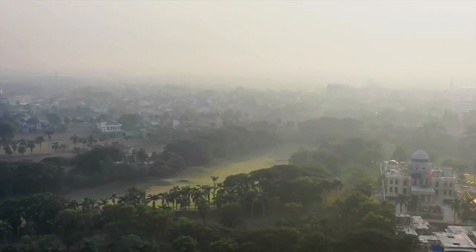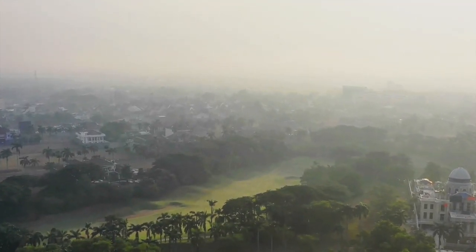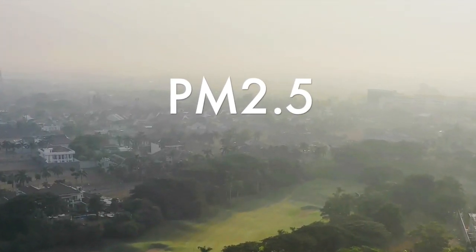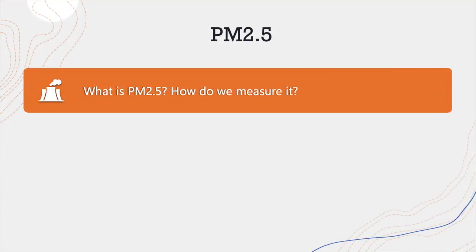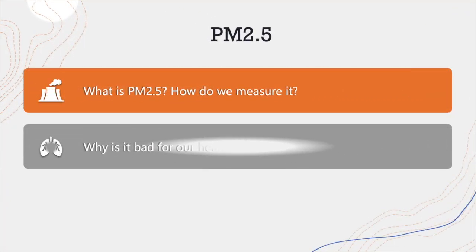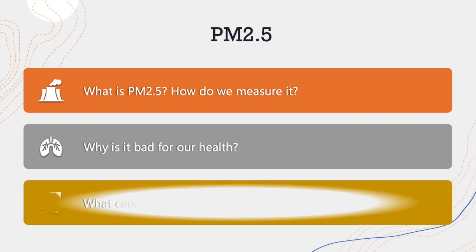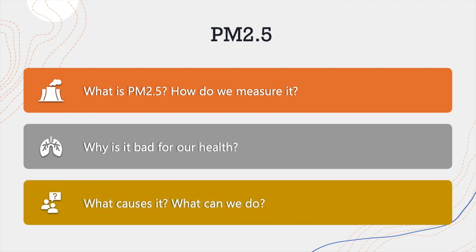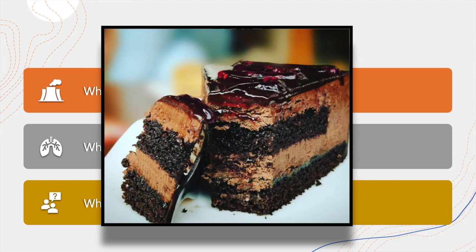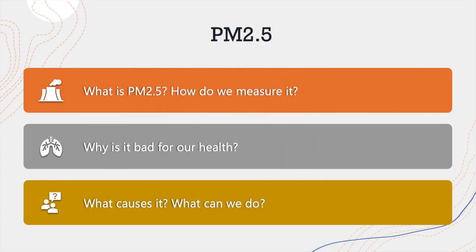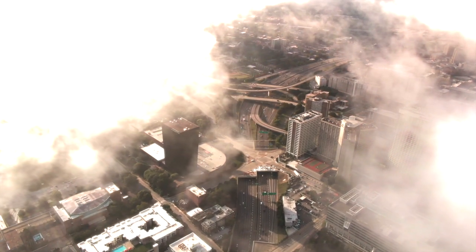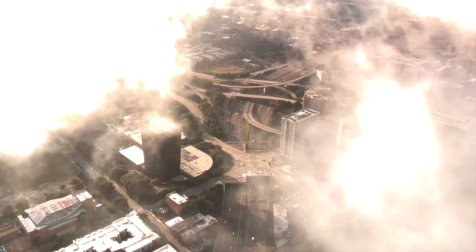A smoky haze hangs in the air making it hard to breathe. It's caused by something called PM 2.5. But what is PM 2.5 and how do we measure it? Why is it bad for our health? What's the cause and what can we do about it? In this video I'm going to answer all of those questions, and in doing so we'll also see how your dessert may be the reason why Thailand is choking in air pollution. Come along as we understand PM 2.5 and find the bitter taste hiding in your sweet treat.